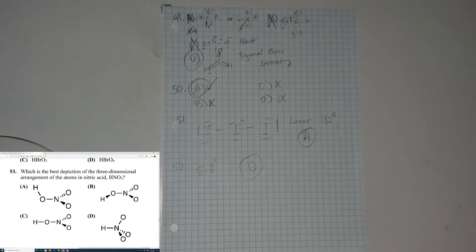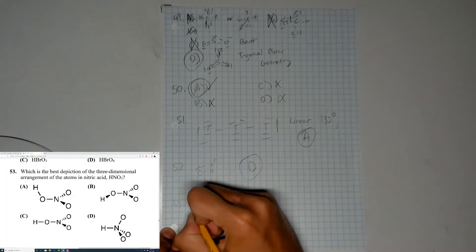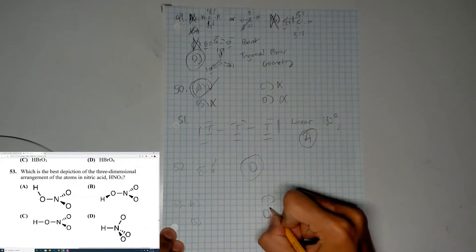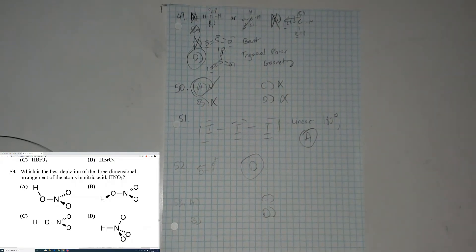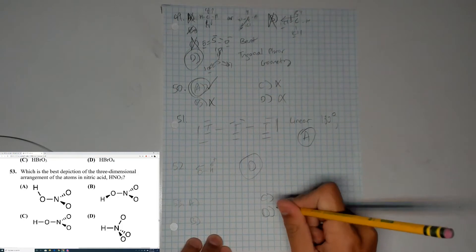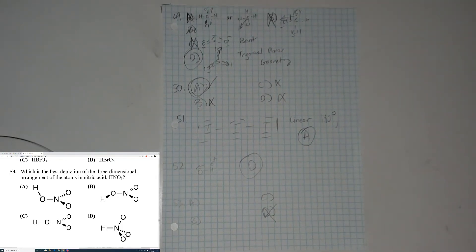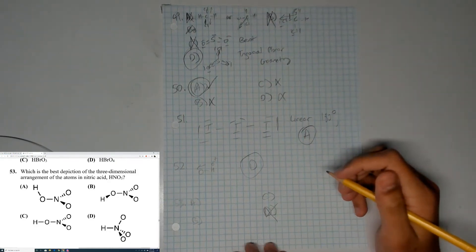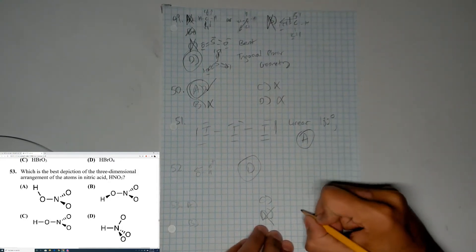Question 53 is a little tricky — which is the best depiction of the three-dimensional arrangement of atoms in nitric acid? You can cross out D because it doesn't make sense — nitric acid must be bonded to an oxygen, and that geometry is different from the other three. Now let me draw the Lewis structure of HNO3.